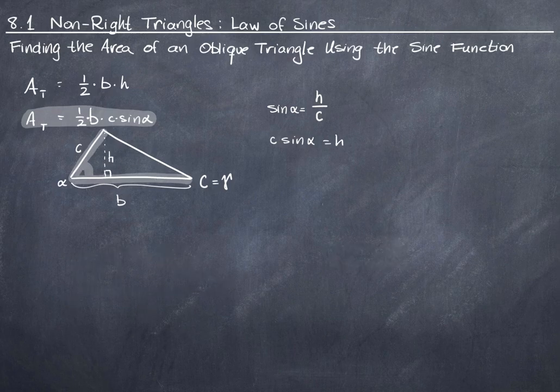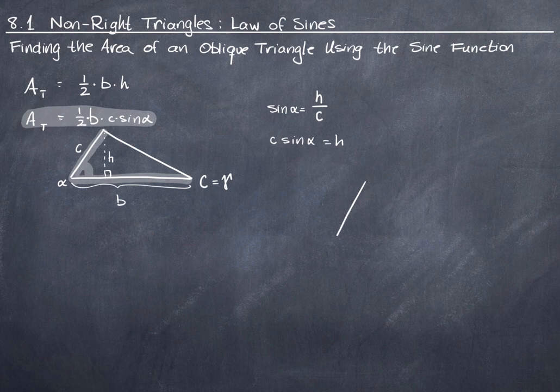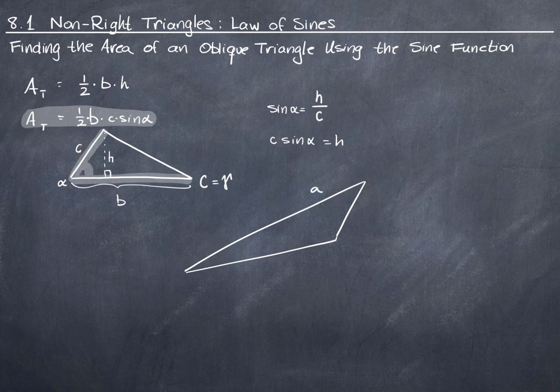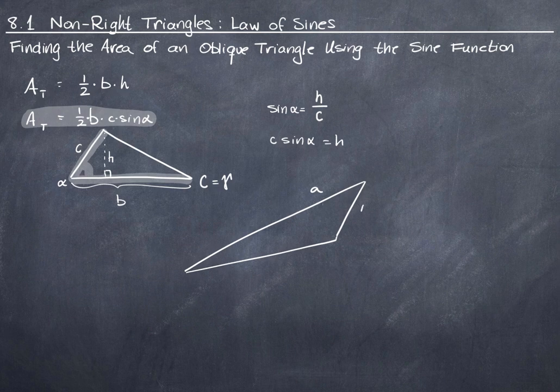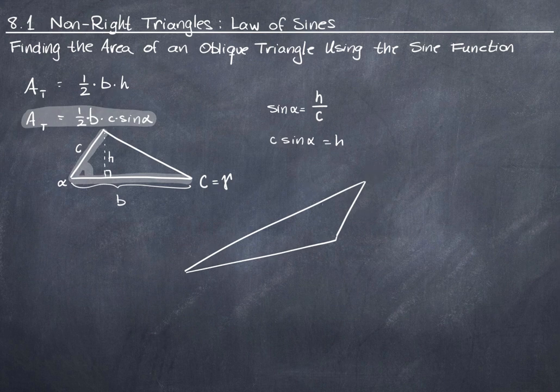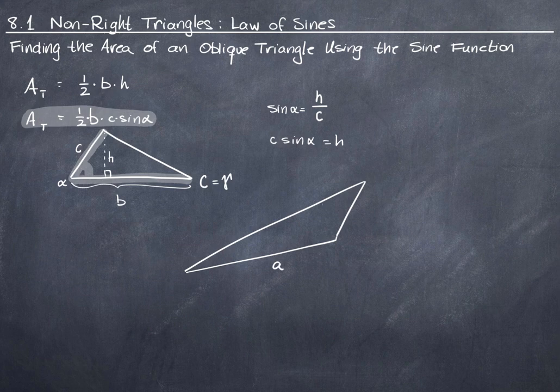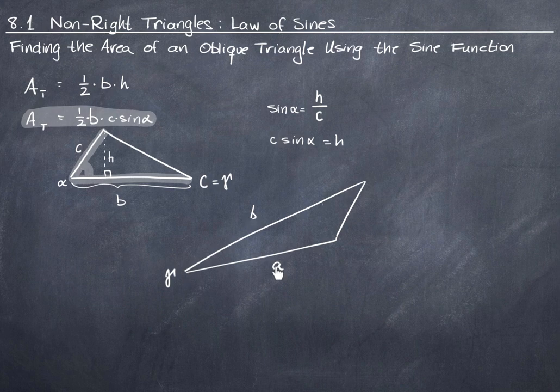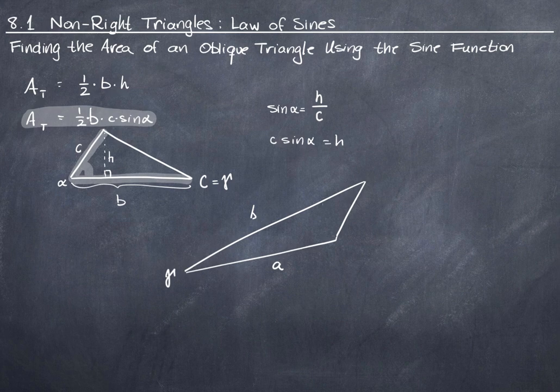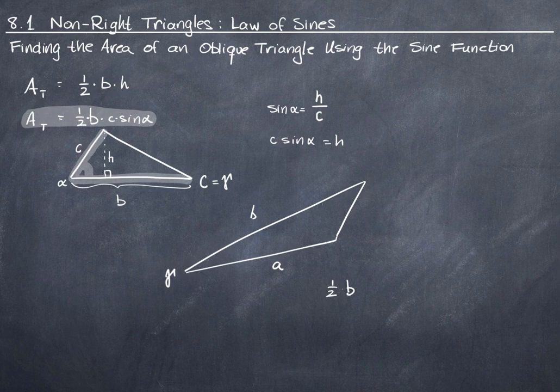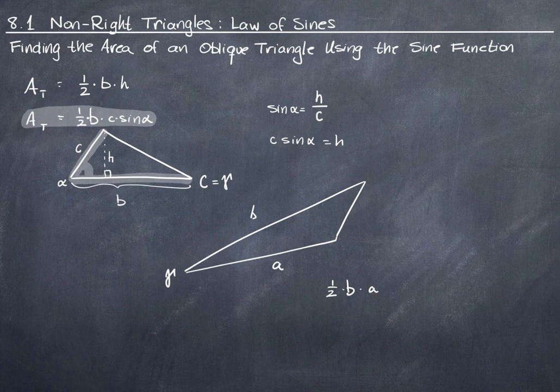It doesn't have to be in this orientation. For example, you could have a really weird triangle. You could have this side, this angle, and this side. As long as it's side, and then angle, and then side, those are the three pieces of information you know you're given. The area of this triangle is going to be one-half times the length of b times a times the sine of gamma in this case.